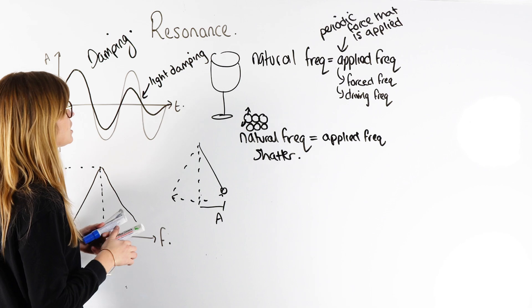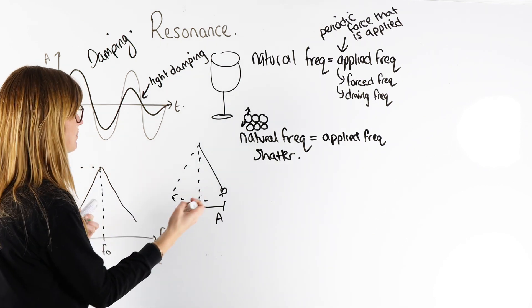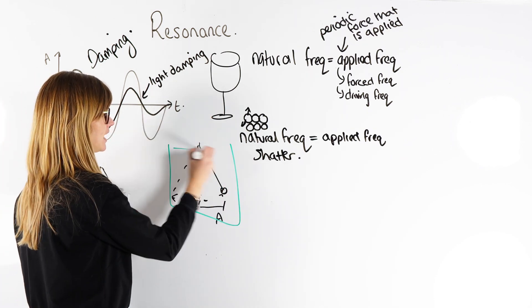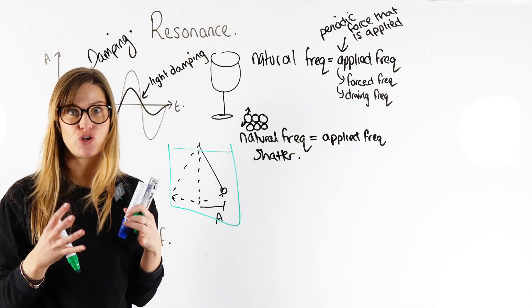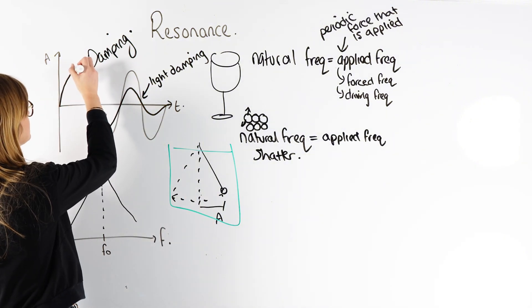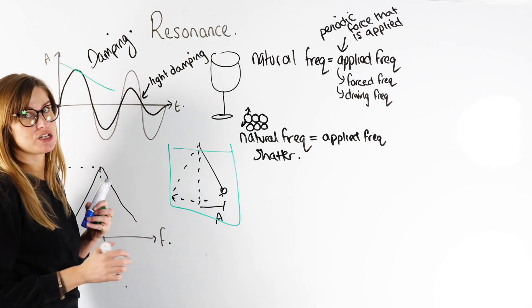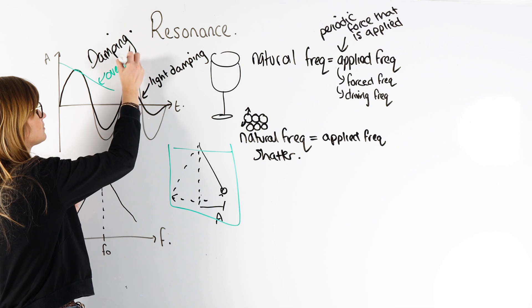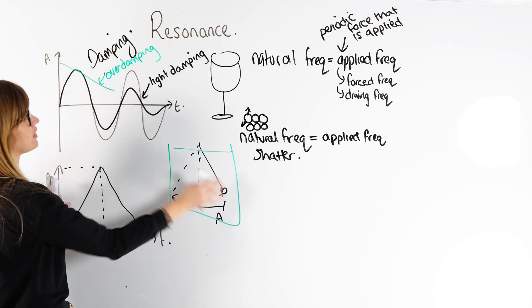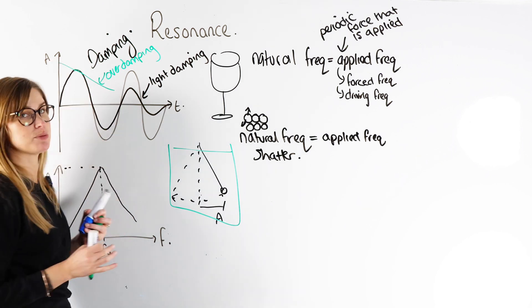There's another one called heavy dampening, or over dampening. Over dampening is like putting our pendulum inside a big container of honey or a really viscous fluid. What's going to happen is maybe when it starts to oscillate, it'll never get back to its equilibrium position. So we call that over dampening — when it starts to vibrate from maximum amplitude, it's never going to return to its equilibrium position.